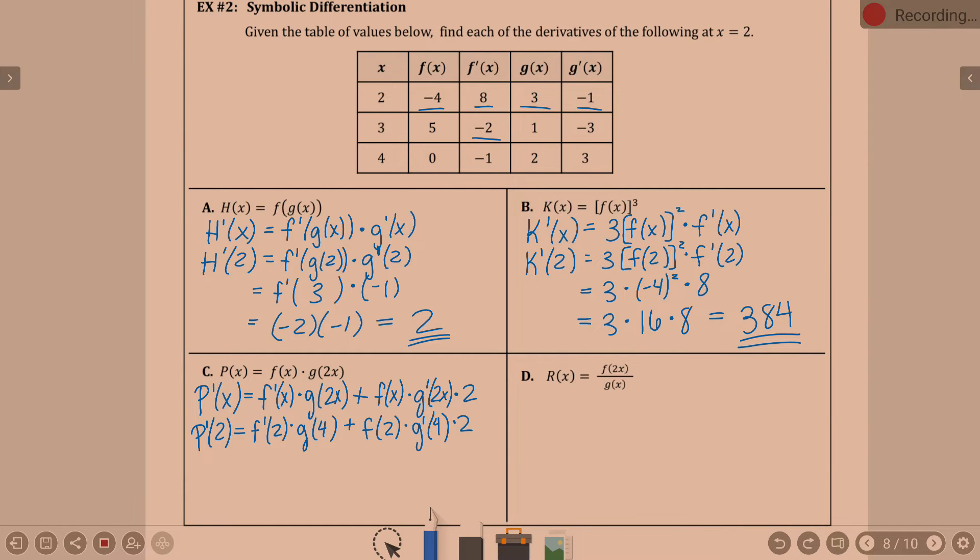So, we're doing p prime of 2. Which means it's going to be f prime of 2 times g of 4. Because it's 2 times 2, right? Plus f of 2 times g prime of 4 times 2. Does that times 2 come up with g? No. We had to do chain rule on the derivative. The derivative of g of something is g prime of something times the derivative of the something. The derivative of 2x is the 2. So only when you're taking the derivatives. p prime of 2. Let's see. f prime of 2 is 8. g of 4 is 2. Plus f of 2, negative 4. g prime of 4 is 3 times 2. 8 times 2 is 16. Negative 4 times 3 is negative 12. Times 2, negative 24. 16 minus 24 is negative 8.